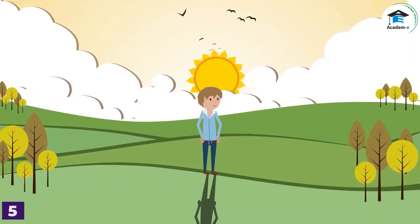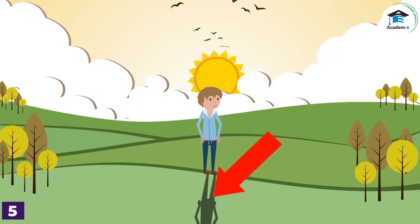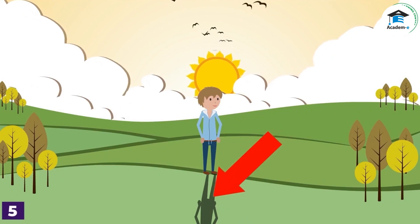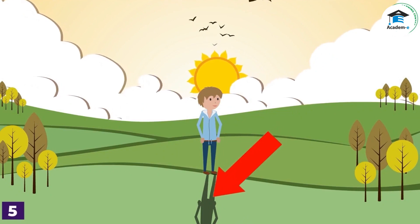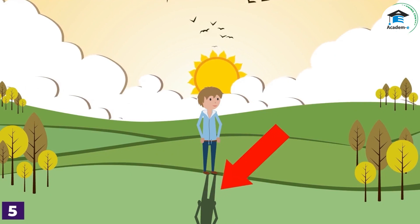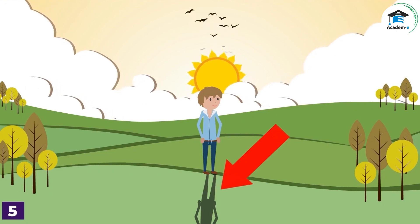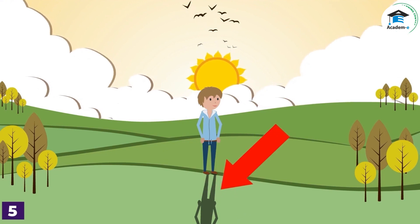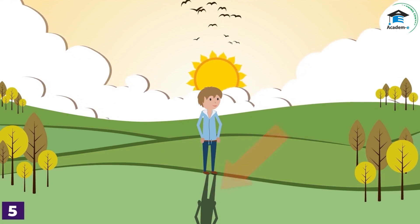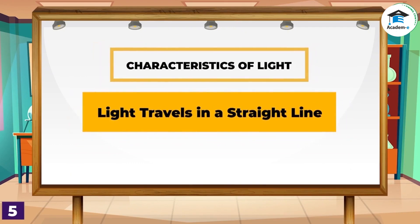Have you tried staying under the sun with your back turned away from it? What do you see on the ground in front of you? When your body blocks the path of light, you see a shadow. The light does not go through you, so a dark outline of your body is formed. Light travels in a straight line.